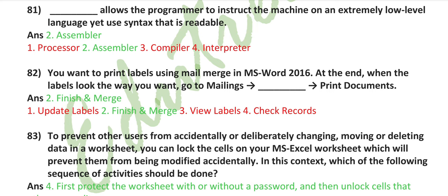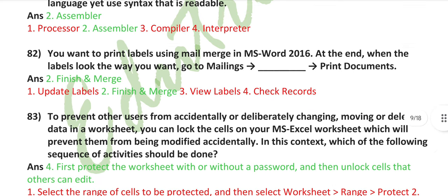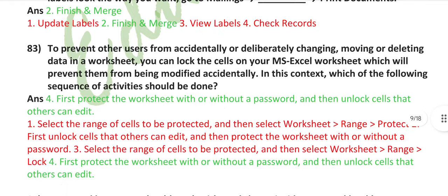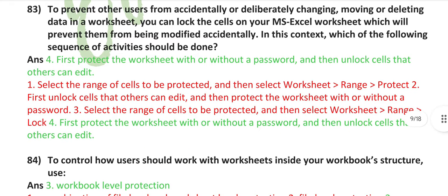Assembler allows the programmer to instruct the machine on an extremely low level language. It uses syntax that is readable. You want to print labels using mail merge in MS Word 2016. At the end, when the labels look the way you want, go to mailings, finish and merge, and print documents. To prevent other users from accidentally or deliberately changing, moving, or deleting data in a worksheet, you can lock the cells on your MS Excel worksheet, which will prevent them from being modified accidentally. In this context, which of the following sequence of activities should be done first? Protect the worksheet with or without a password, and then unlock cells that others can edit.